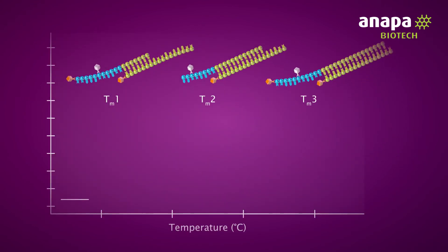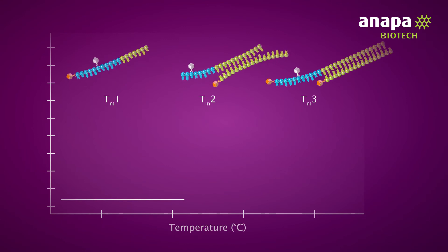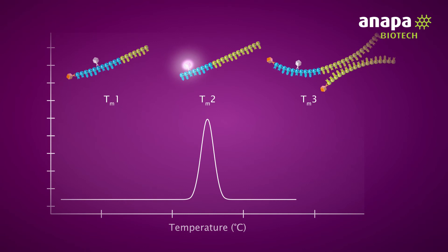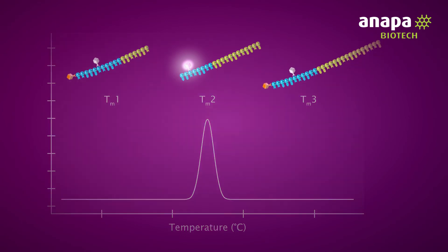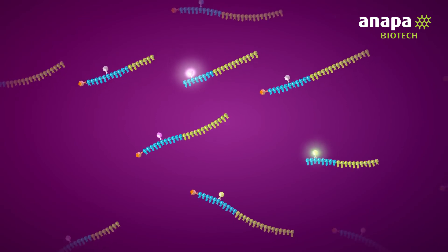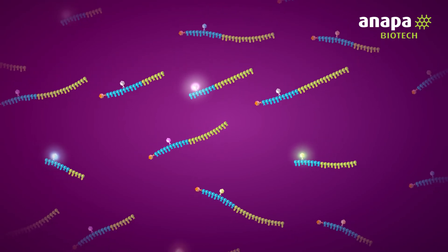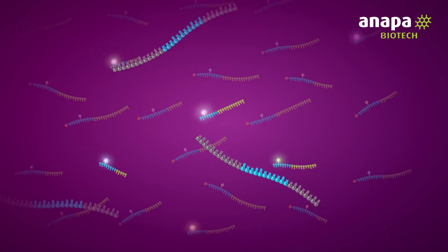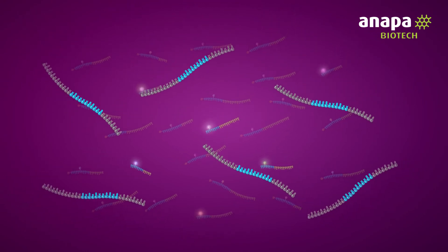As the quenching probes dissociate, only the activated target probes will provide a melting curve readout, since the fluorophores on the non-activated probes remain quenched. The melting curve analysis makes it possible to determine exactly which probes have been activated and hence reveals the content of target analytes in the sample.